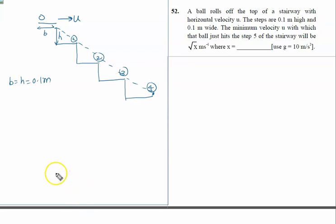First of all, we will find the horizontal range. The horizontal range is given by one, two, three, four - four into b, that is 0.4 meter. Now in time t, the ball is reaching here. It is released at t equal to zero.